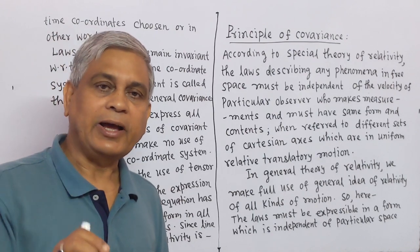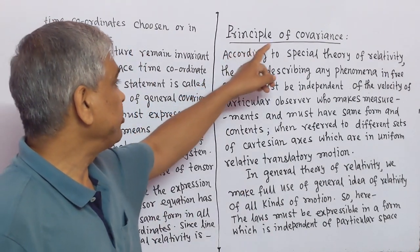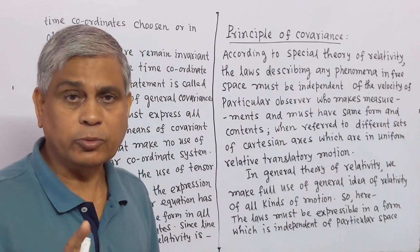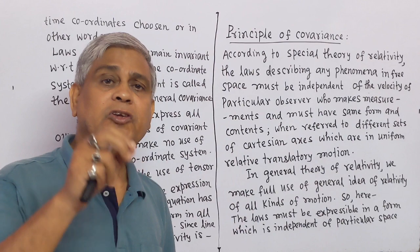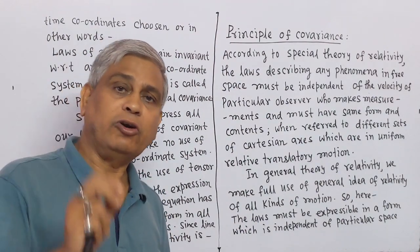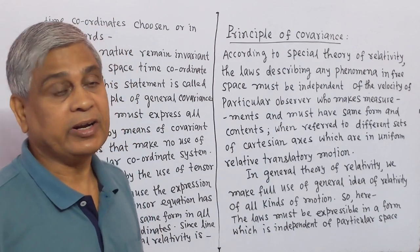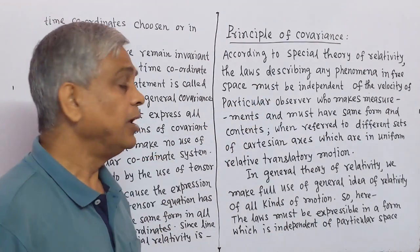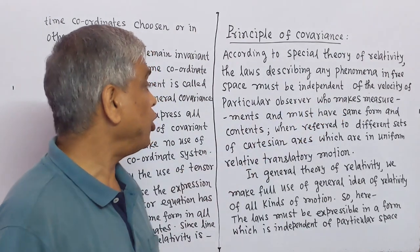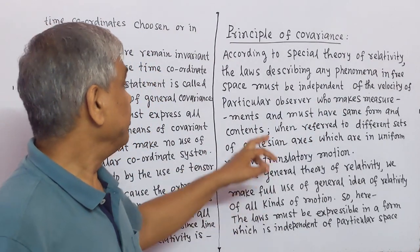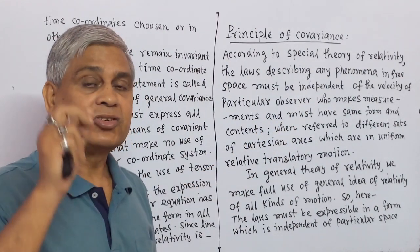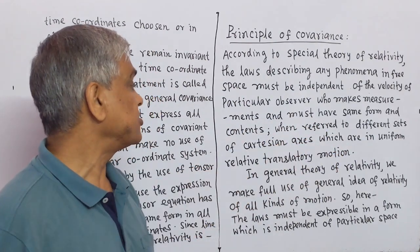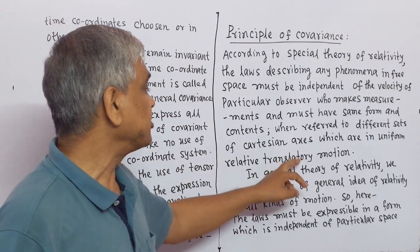I will try to clarify the principle of covariance in General Theory of Relativity. Firstly, we have to analyze the laws of Special Theory of Relativity. According to Special Theory of Relativity, the laws describing any phenomena in free space must be independent of velocity of the particular observer who makes measurements, and must have the same form and contents when referred to different sets of Cartesian axes which are in uniform relative translatory motion.